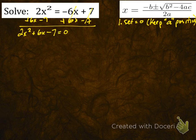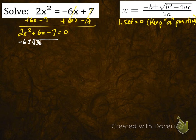By adding and subtracting the 6x and the negative 7, we get that. Alright, so now we plug her into the quadratic formula.